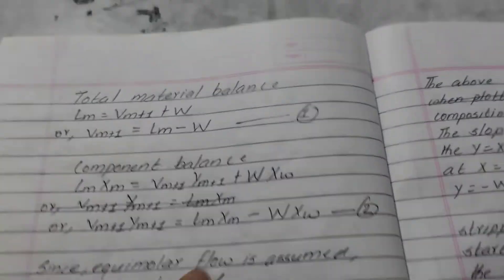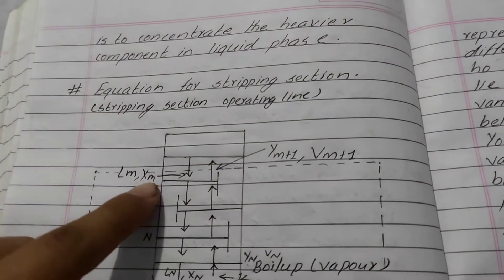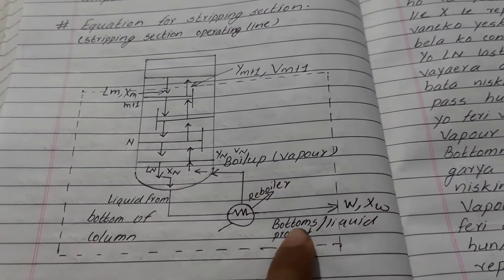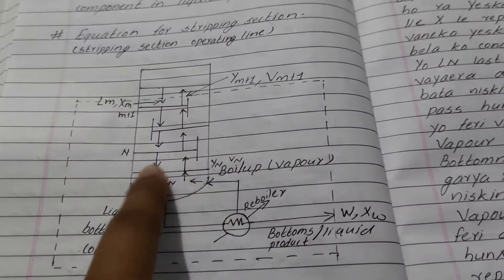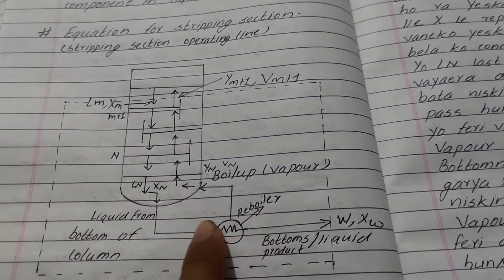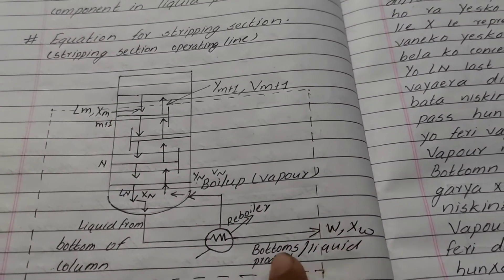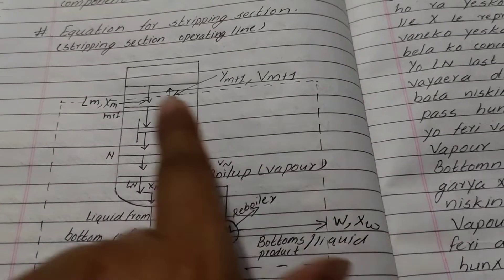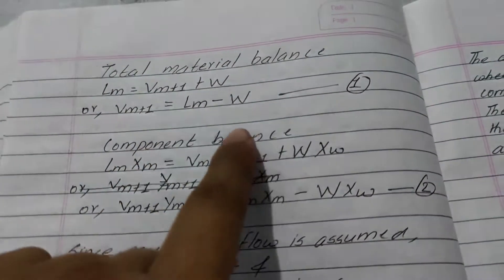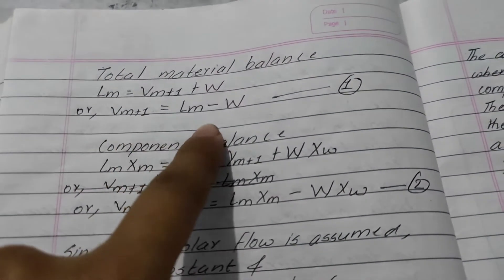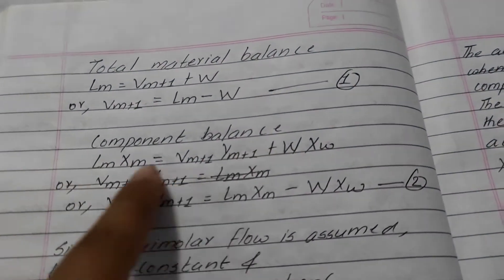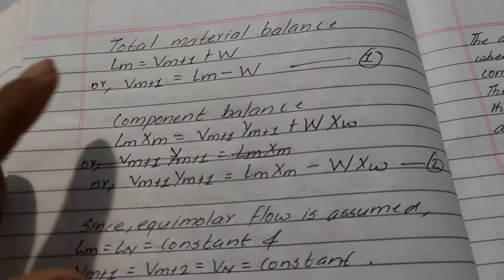We will balance the material. We will mix the liquid with this liquid and then convert the bottom liquid. We will convert the vapor from the top and from the bottom liquid. We will convert the distillation column liquid with this equation. The component balance will be done with this.